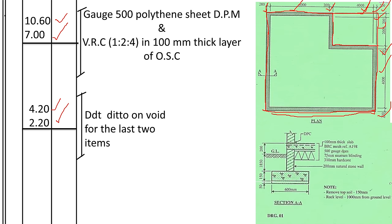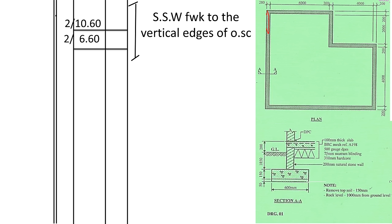For the formwork, we measure the external perimeter. The formwork is fixed on the outside of the walls. Length = 200 + 6,000 + 200 + 4,000 + 200 = 10,600mm, multiplied by 2 sides. Width similarly multiplied by 2 sides. Description: sawn formwork to the vertical edges of the oversite concrete.